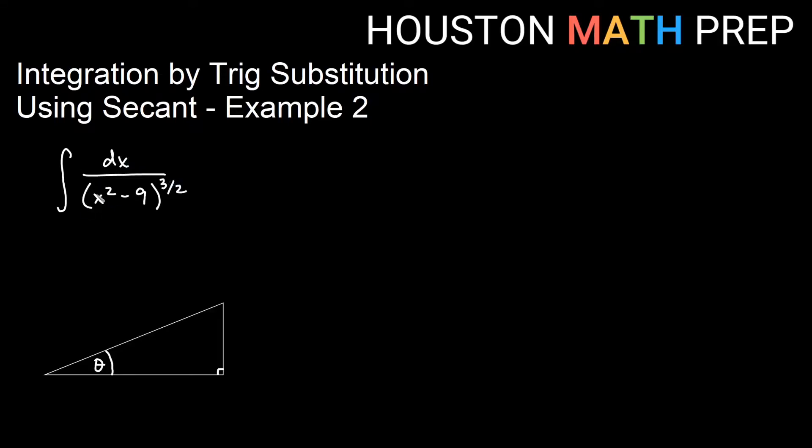We've got the integral of dx over (x squared minus 9) to the 3 halves. We should see this denominator as some variable expression squared minus some constant squared, and that will tell us that this is a secant substitution, u squared minus a squared.